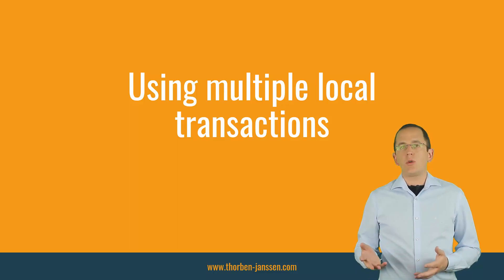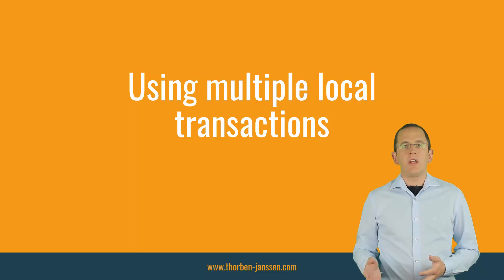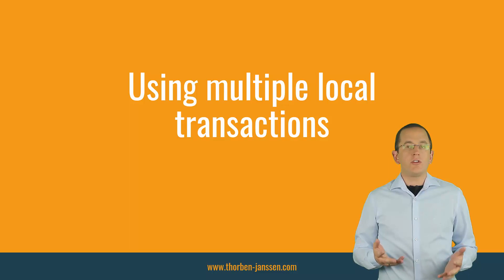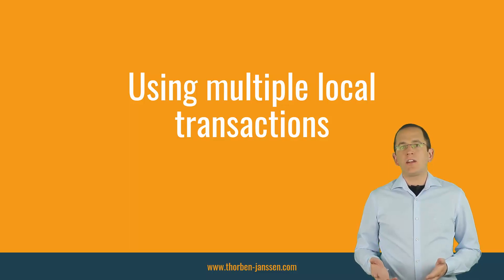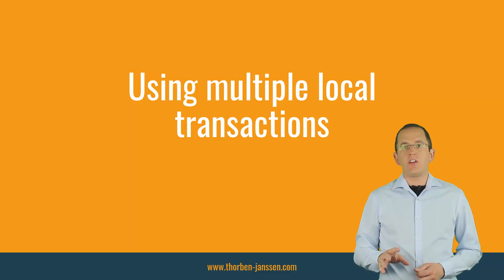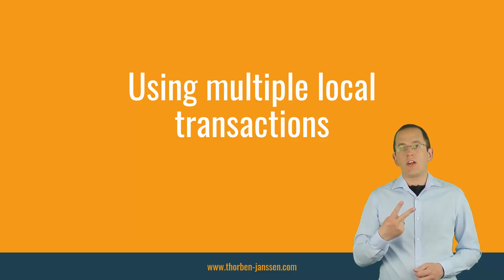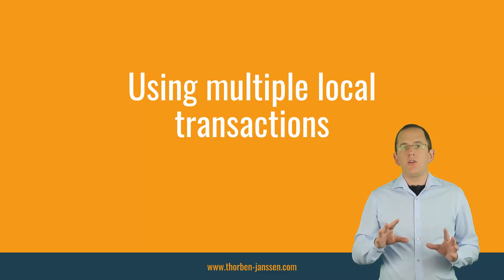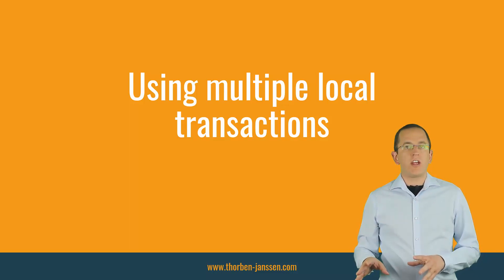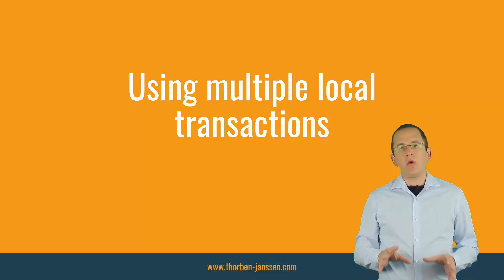Using multiple local transactions will sooner or later cause data inconsistencies. By using multiple local transactions, you create a situation called a dual write. I explained it in great detail in a previous article and video which you'll find in the description. To summarize: you can't handle the situation in which you try to commit two independent transactions and the second commit fails. You might try to implement workarounds that revert the first transaction, but you can't guarantee that they will always work.